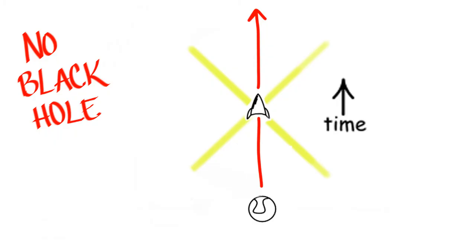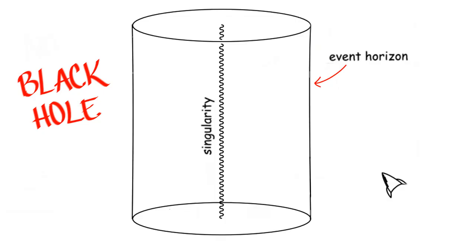Instead of time continuing infinitely upwards and space increasing infinitely outwards, once an object crosses the event horizon of a black hole, aka the point of no return, all possible futures point towards the singularity. Graphically, time would be represented as going inwards, while space travels infinitely upwards and downwards.